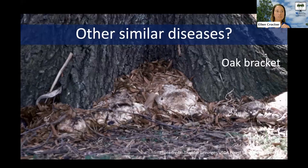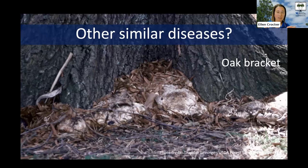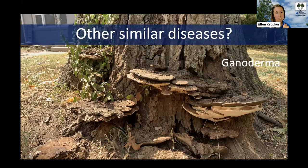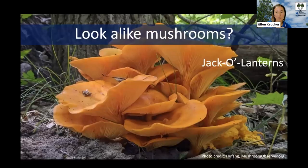What are some other similar diseases that impact tree roots and the base of trees? This is oak bracket fungus — Ganoderma fungi, of which there are many — and it causes damage to the base of the tree and roots, very common on stressed urban trees. It can not only impact the tree's health and vigor but cause structural issues. These are things that functionally can cause disease in the same place as Armillaria root rot.